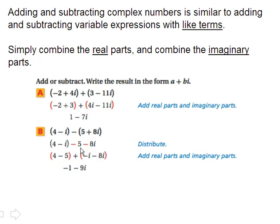So take a look at these couple of examples here. We are looking at the real numbers, negative 2 and 3. Those are like terms. That gives us 1. And 4i minus 11i will give us a negative 7i. So that is our answer there.